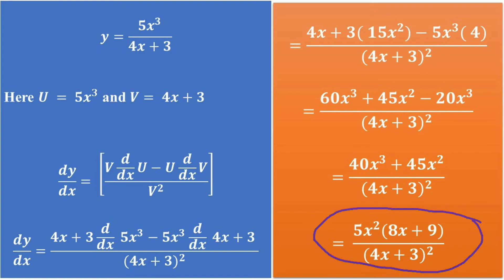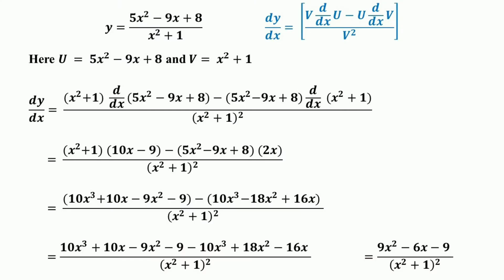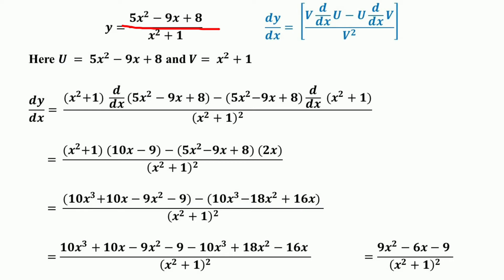So this is the derivative of the given function on the basis of the quotient rule. Consider another function: y = (5x² − 9x + 8) divided by (x² + 1). Here we have two functions — 5x² − 9x + 8 in the numerator and x² + 1 in the denominator.